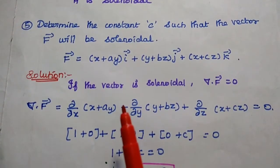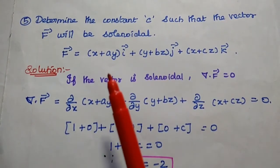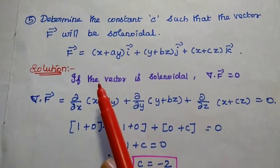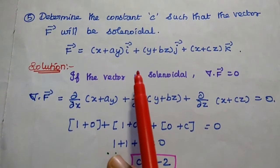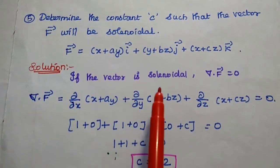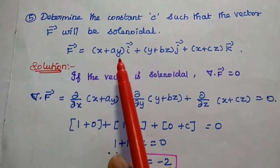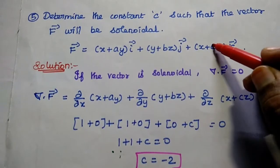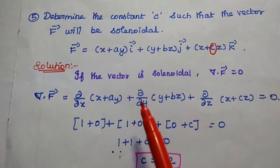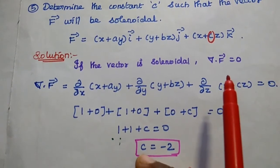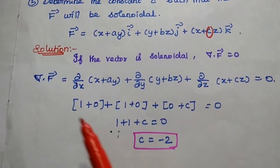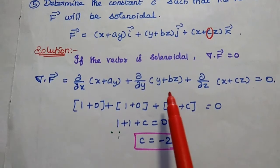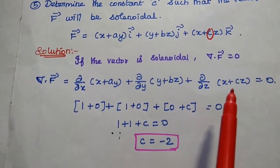The next problem is also based on the solenoidal concept: determine the constant C such that the vector F will be solenoidal. The given vector is F = (x + ay) î + (y + bz) ĵ + (x + cz) k̂. We use the condition del dot F = 0, applying the divergence formula: ∂/∂x(x + ay) + ∂/∂y(y + bz) + ∂/∂z(x + cz) = 0.